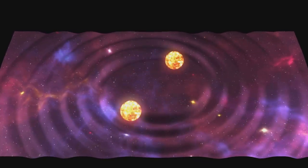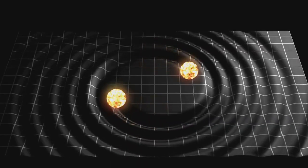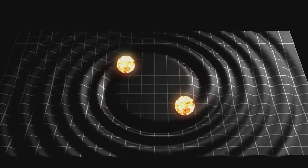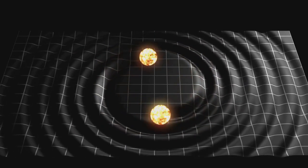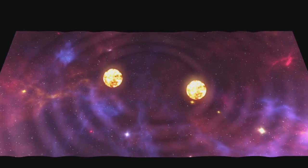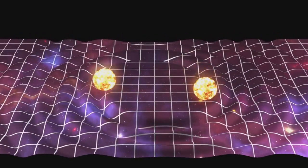Picture the universe as a giant rubber sheet and imagine what happens when a heavy ball, say a planet or a star, is placed on this sheet. It sinks in, causing the sheet around it to warp. Now if this ball were to move, it would create ripples on the sheet and these ripples would travel outward from their source. That's a simplistic way to visualize gravitational waves.